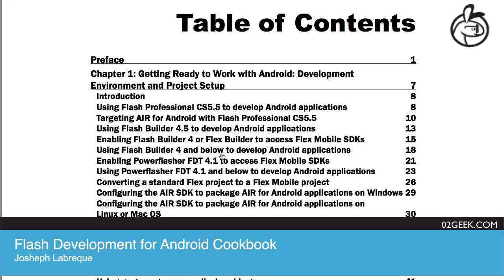Let's start with Chapter 1, which is called Getting Ready to Work with Android Development. It gives an overview of how to get your application running — whether in Flash Professional CS5.5 targeting AIR in CS5.5, using Flash Builder, or Power Flasher. So you're going through the most popular editors and showing how to actually get something from your computer onto those devices. This is basically a chapter about setting up your environment for the rest of the chapters — it's one of the shorter chapters, covering Flash Builder, Flash Pro, and more, to get you up and running with AIR for Android.